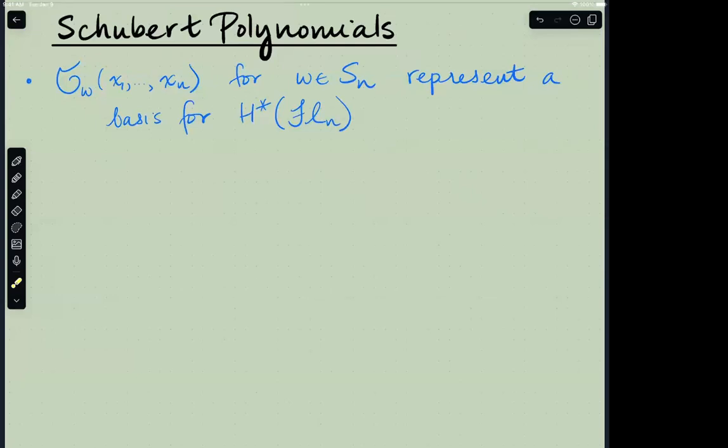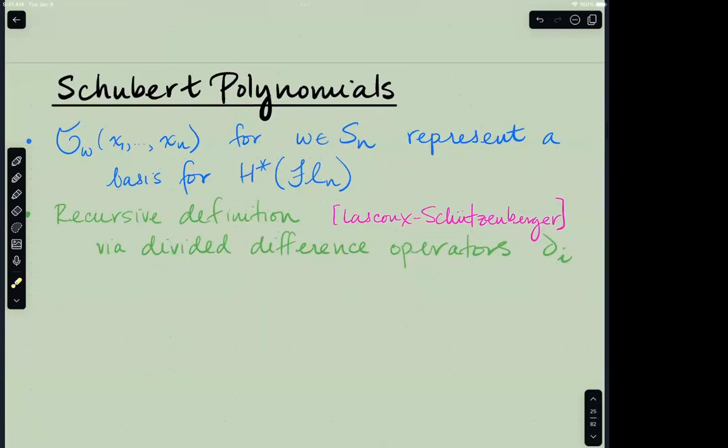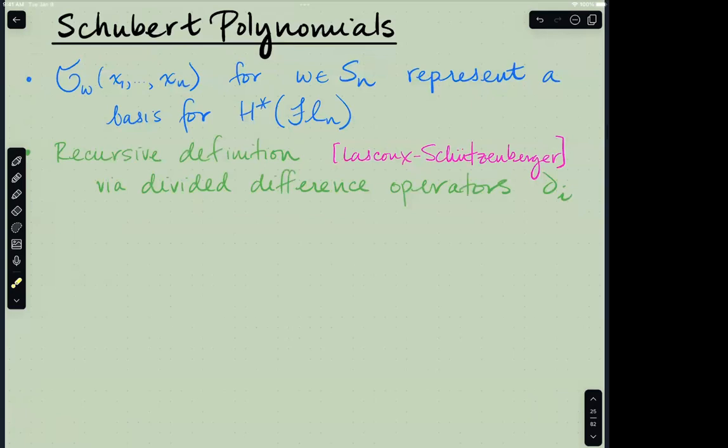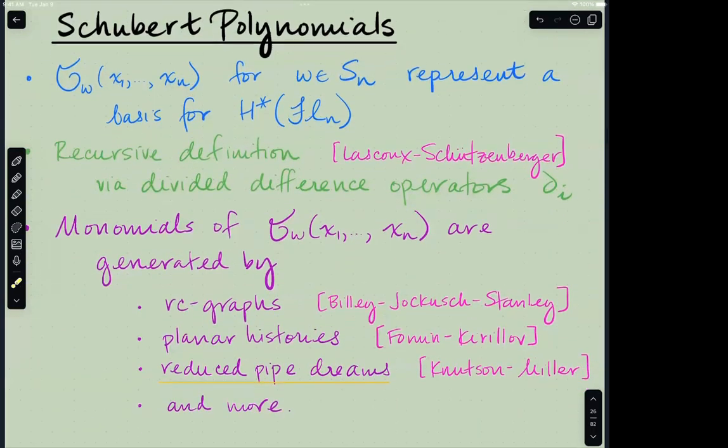Maybe more familiar to this particular audience, the Schubert polynomials, I'll focus on type A, indexed by permutations in S_n, represent a basis for the cohomology of the flag variety, the complete flag variety in C^n. Lascoux-Schützenberger presented a recursive definition using divided difference operators for Schubert polynomials, but that's not the perspective that I will take here.